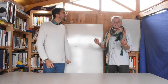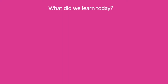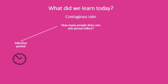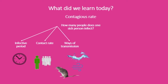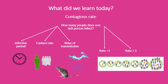So let's see what we learned today. We learned about the contagious rate, which tells us how many people a sick person usually infects. It depends on the infective period — the amount of time a sick person can infect others — the contact rate, meaning how many people a sick person usually meets and how close they get, and the ways the disease is transmitted. If the rate is 1, the disease spreads slowly, but if the rate is bigger, the disease spreads very quickly.